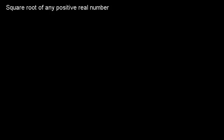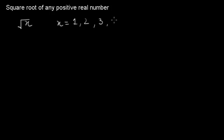Let's see how we can find out the square root of any positive real number. Let's say we have one positive real number x and we have to find out the square root. x can be any positive real number — it may be 1, 2, 3, or a decimal number like 2.5, 3.7, or any real number.